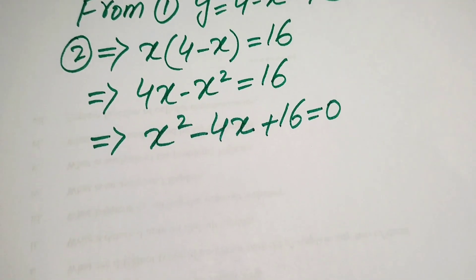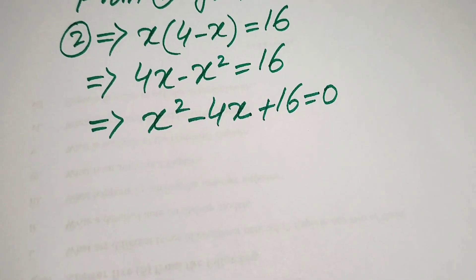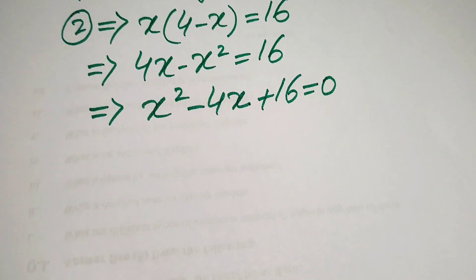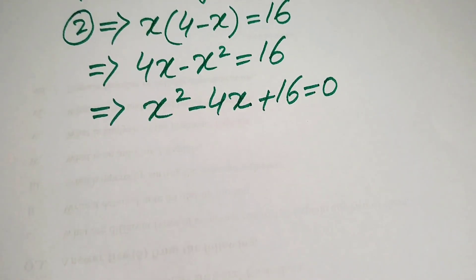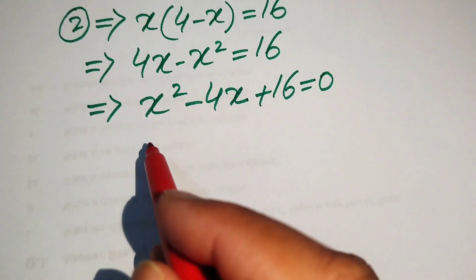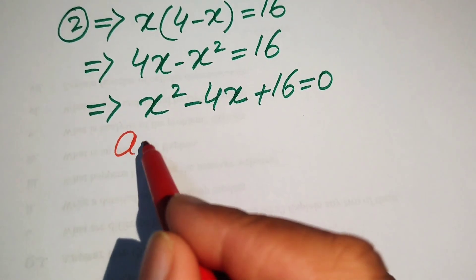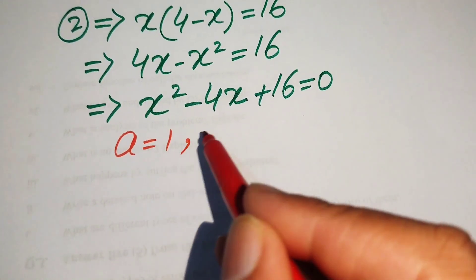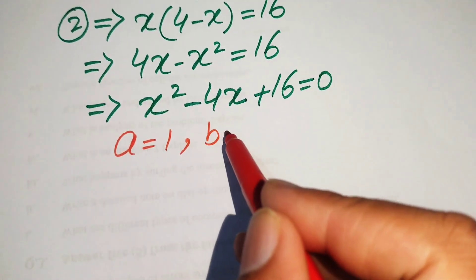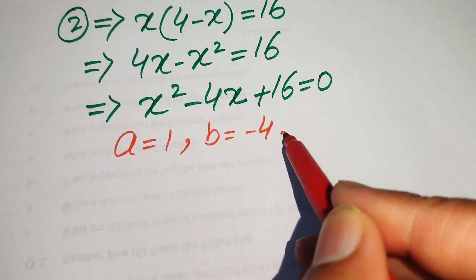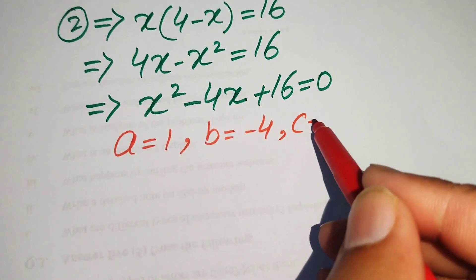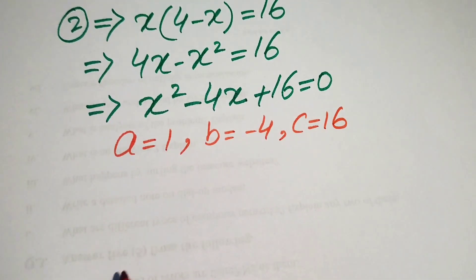This is now a quadratic in x. We use the quadratic formula to solve it. The coefficients of the equation are: a equals 1, b equals minus 4, and c equals 16.